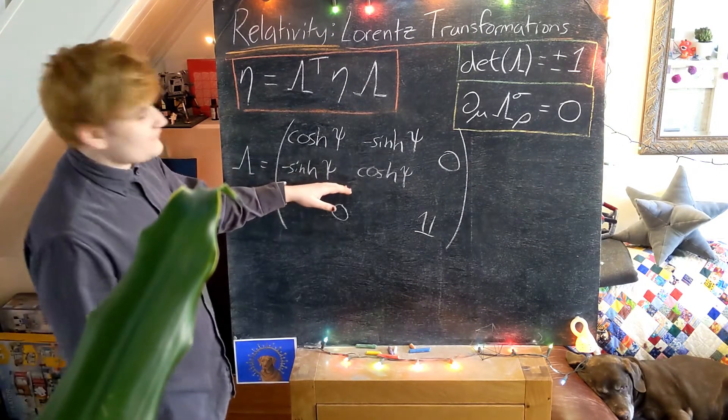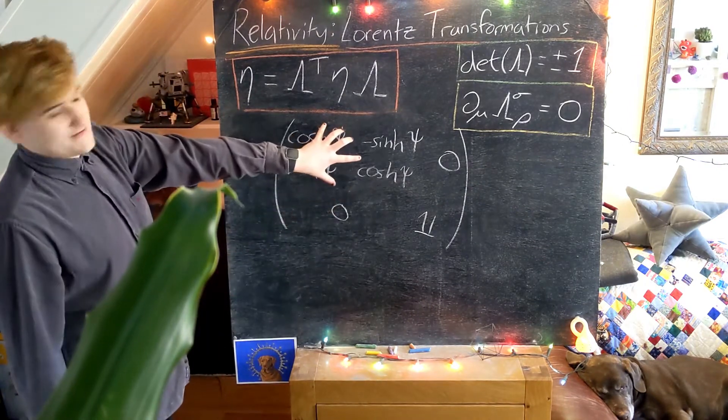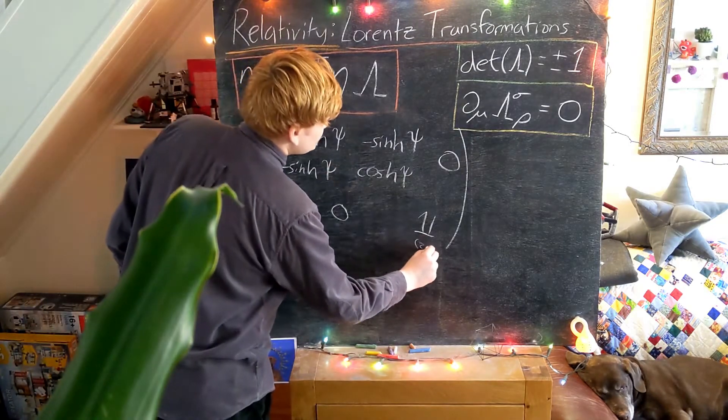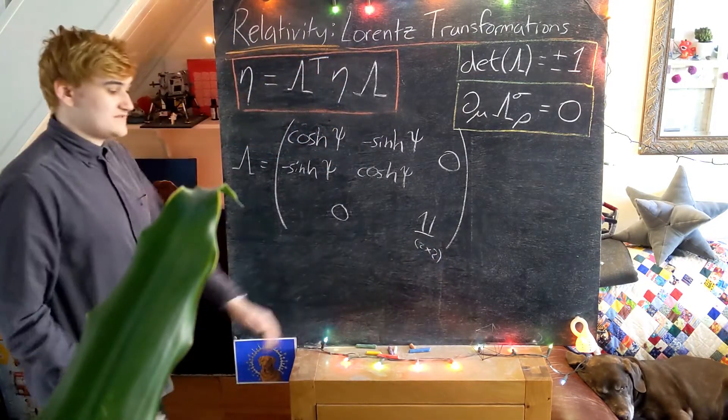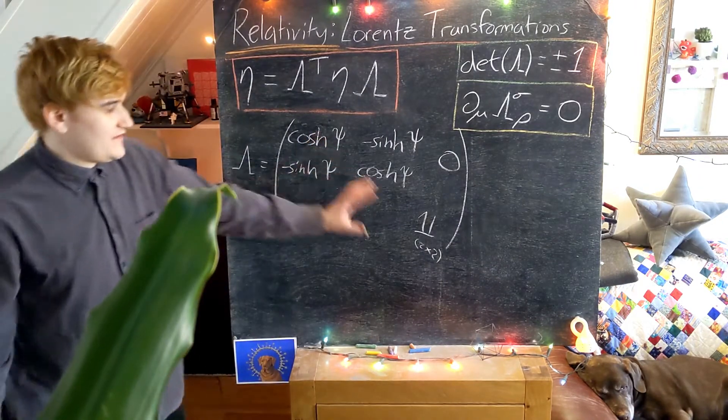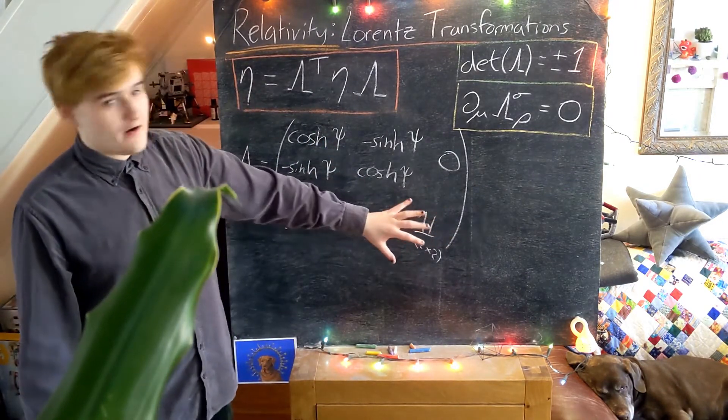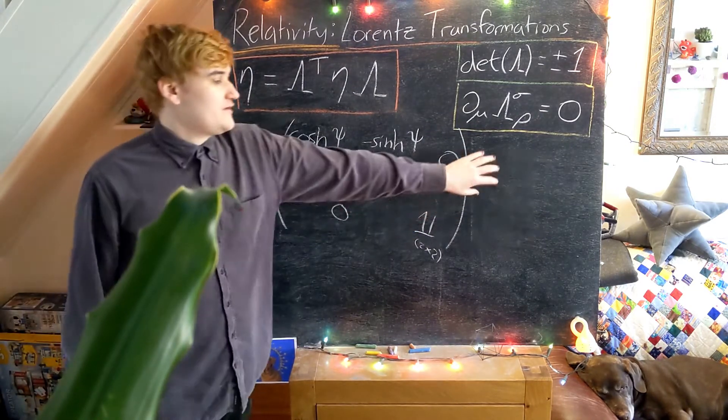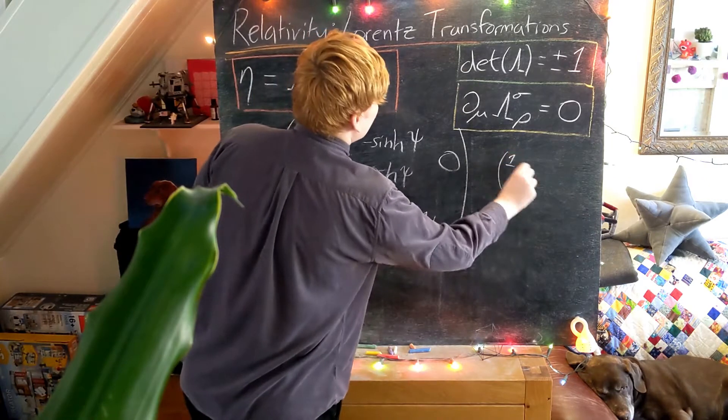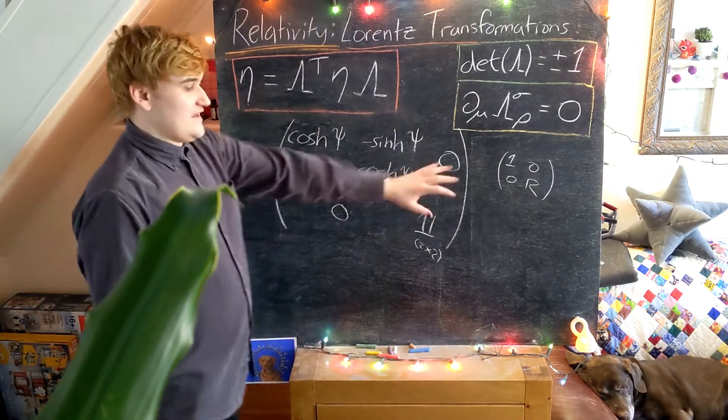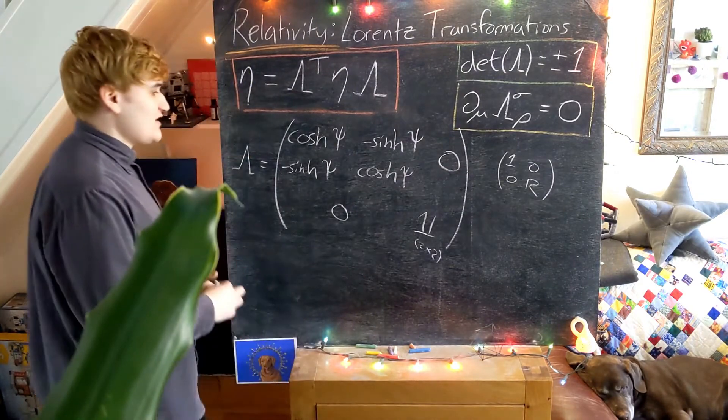So I've written here a 4x4 matrix. It's kind of a block up here and then this is another 2x2 block down there. And we can now pretty much just forget about this bottom part of the block because as we saw in the previous example the top right corner, the 1, didn't really have any effect on the transformation.